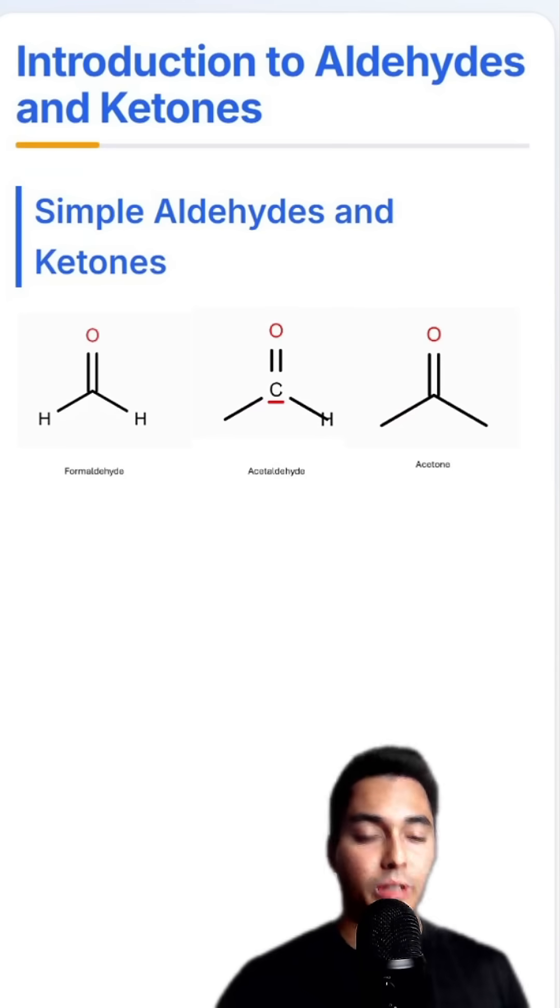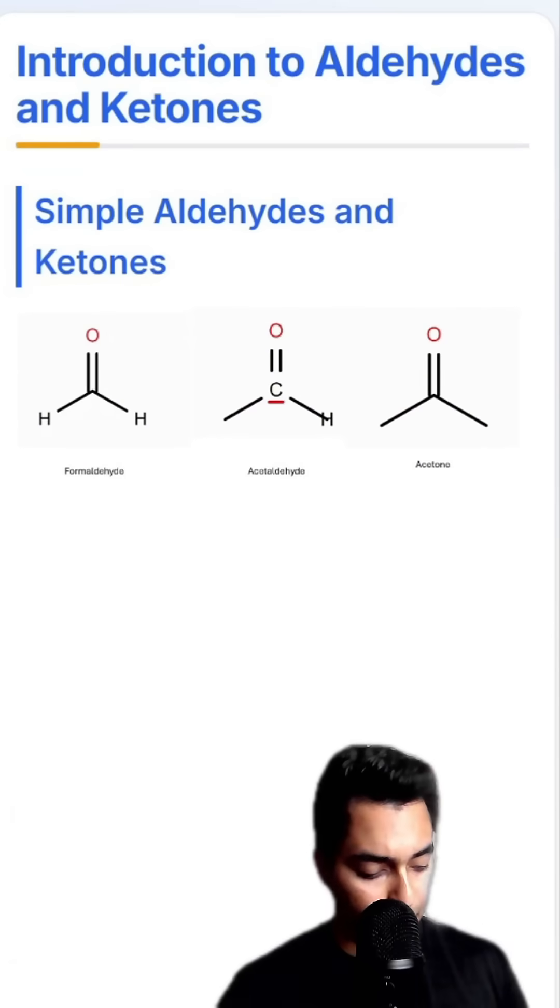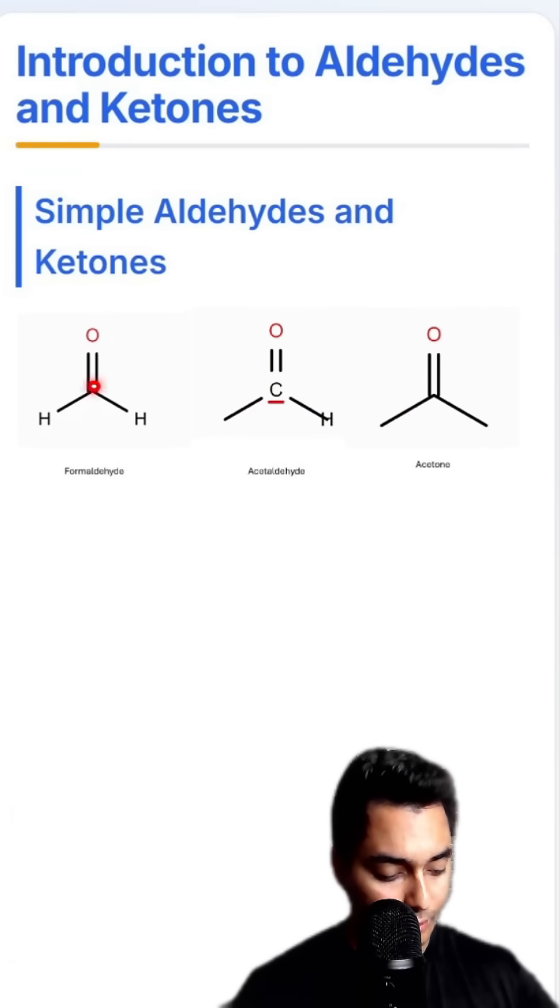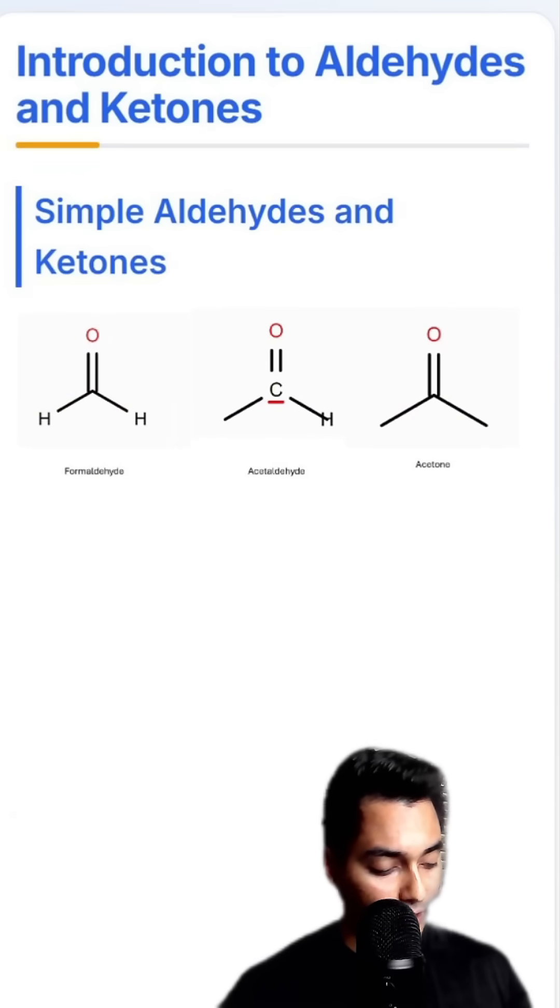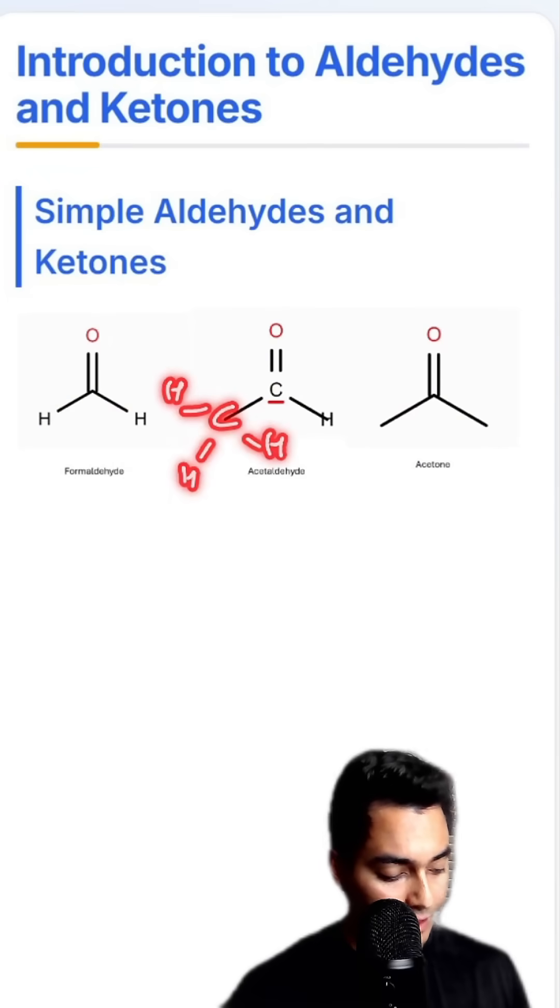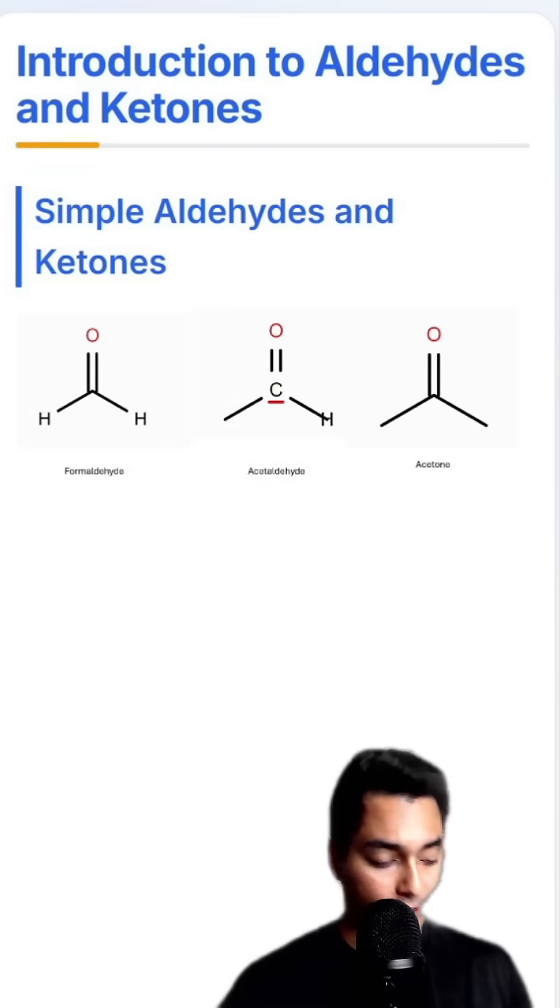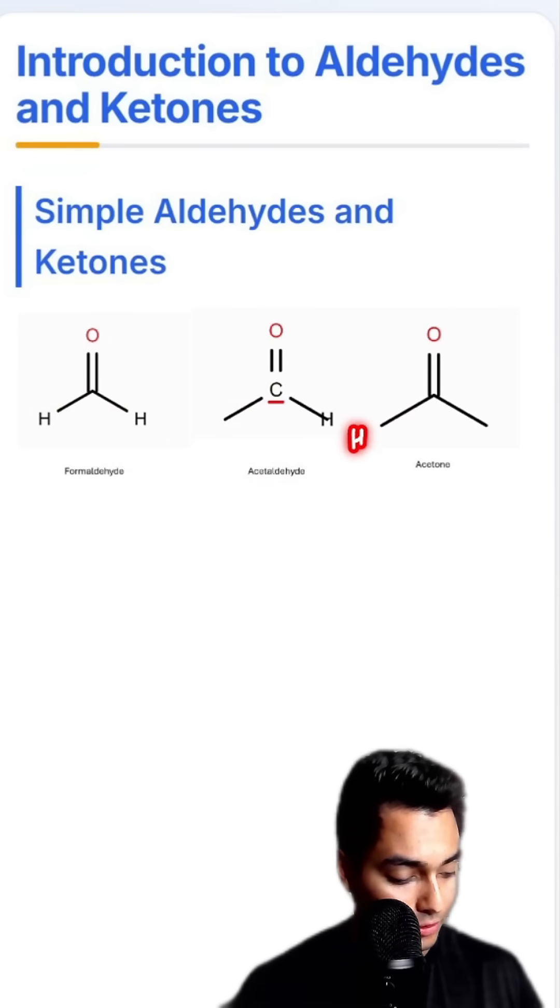Here are some simple aldehydes and ketones. First we have formaldehyde, which is a C double bonded to an O with two H's. If we replace one of those H's with a CH3 group, this is called acetaldehyde. And if we have two CH3 groups on this side, then this is called acetone.